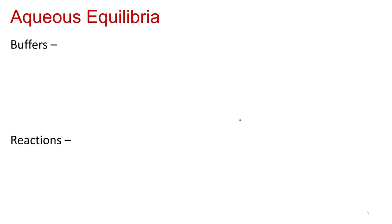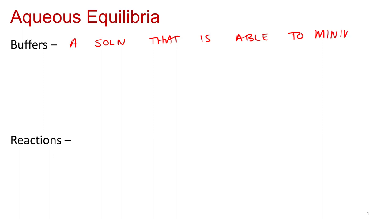For buffers - what is a buffer? A buffer is a solution that is able to minimize changes in pH. That's what buffers do. They minimize changes in pH, and they're pretty awesome at it.